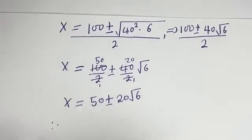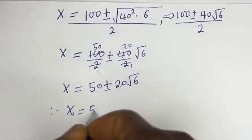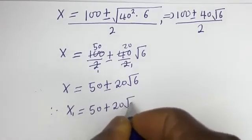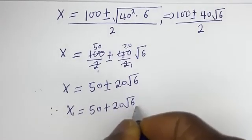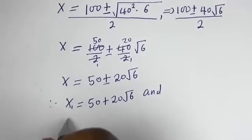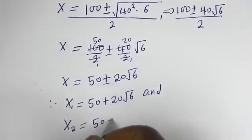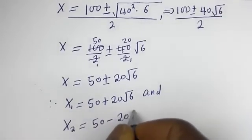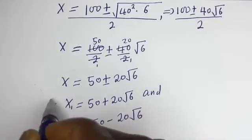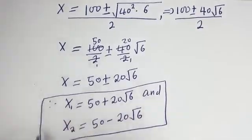Therefore, x1 is equal to 50 plus 20 root 6, and x2 is equal to 50 minus 20 root 6. We've gotten the values of x1 and x2. Let's now solve for y1 and y2.